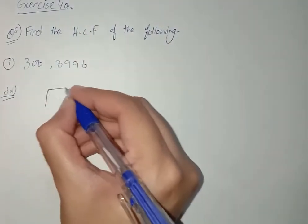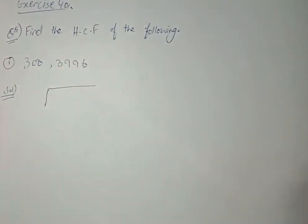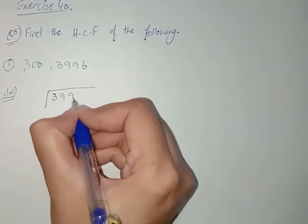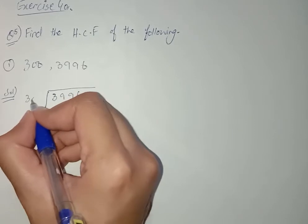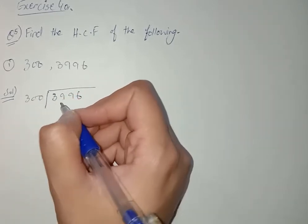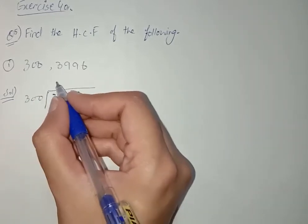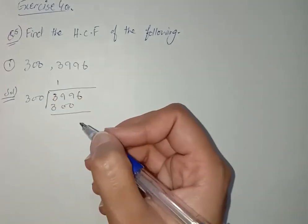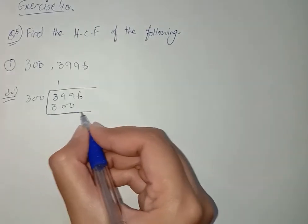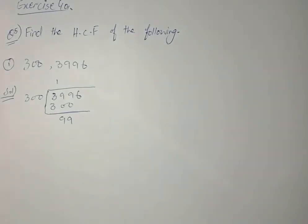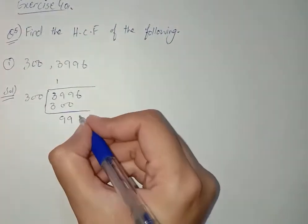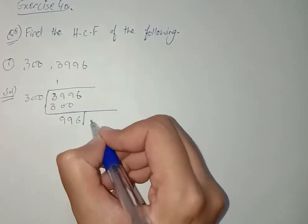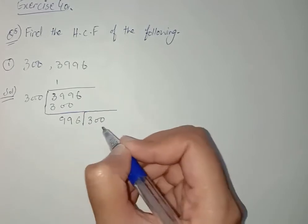I hope you know what the division method is, because these questions are present in class five. We have to place 3996 in the bracket and 300 outside the bracket. Three hundred ones are 300, so the remainder is 996.